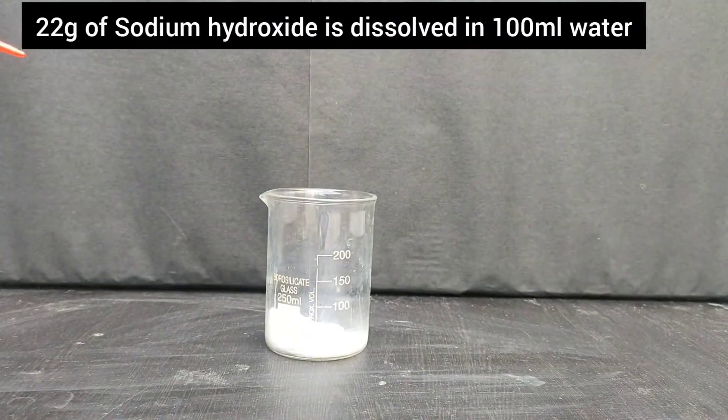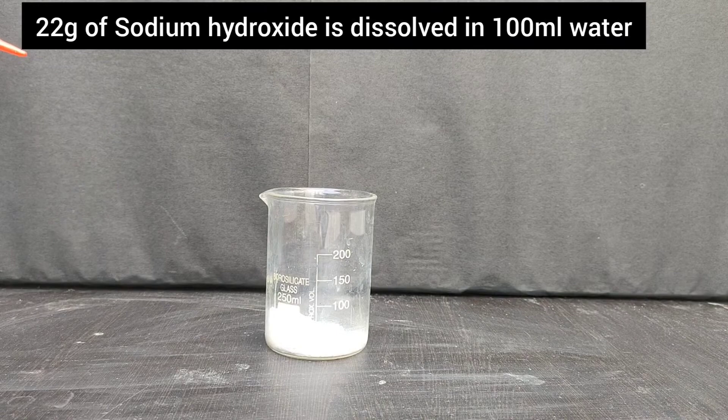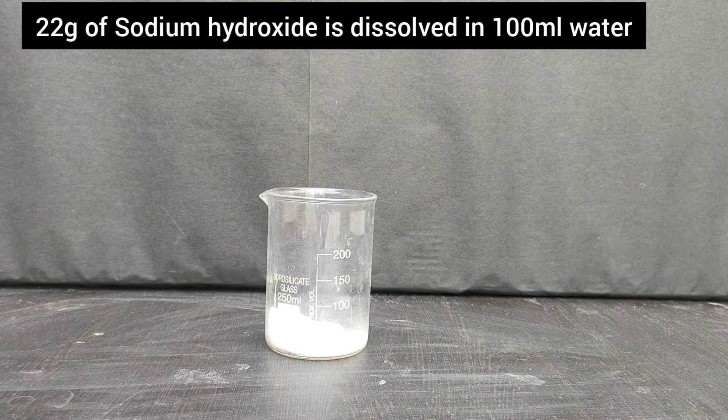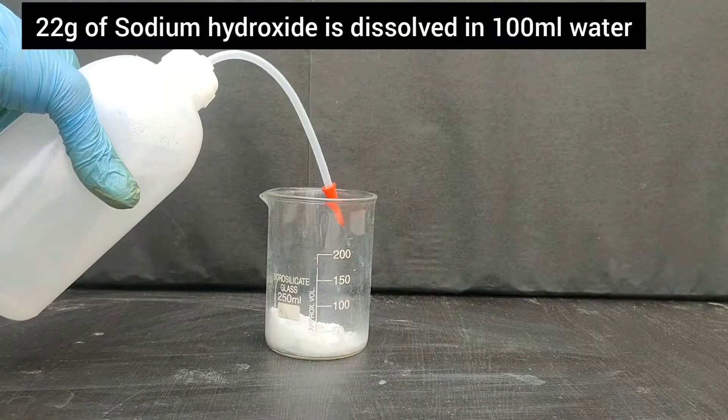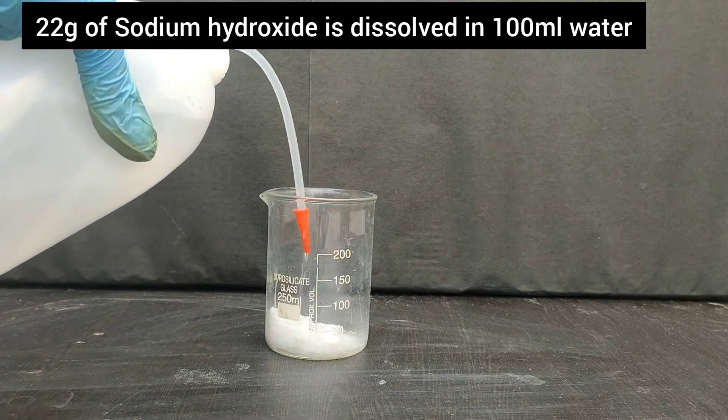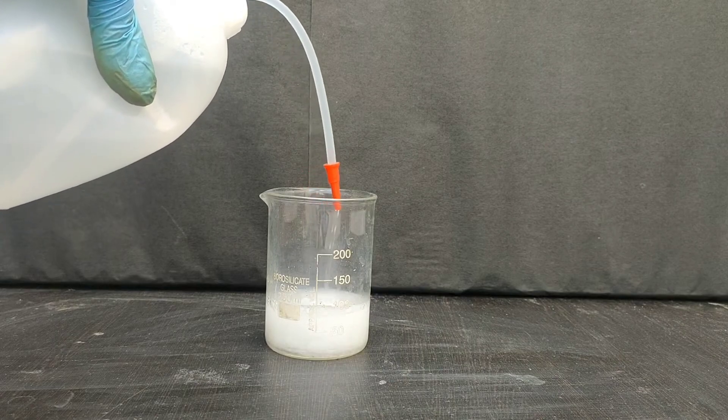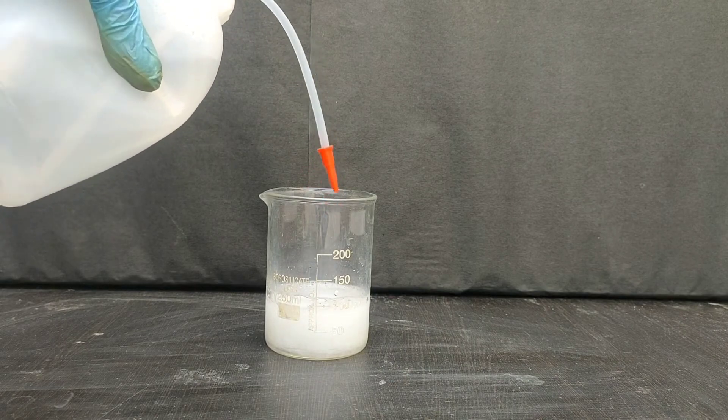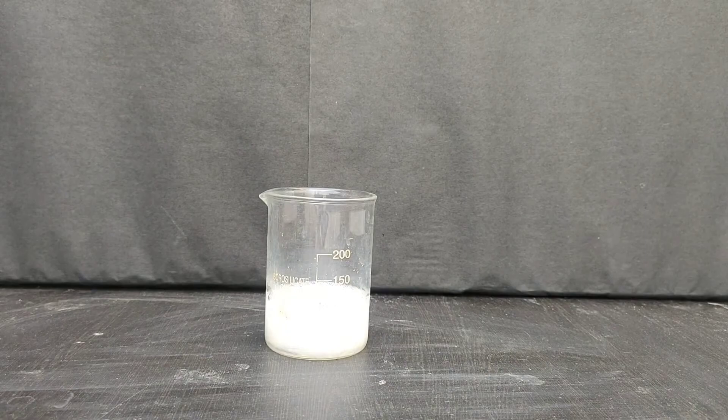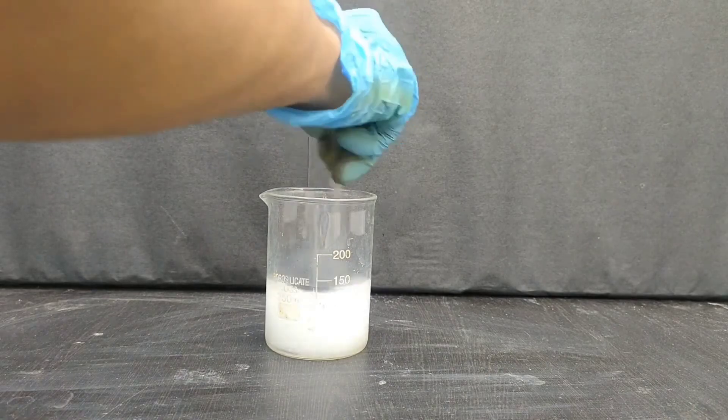We will take 22 grams of sodium hydroxide in a beaker, and to this, we will add 100 ml of distilled water and make a solution.